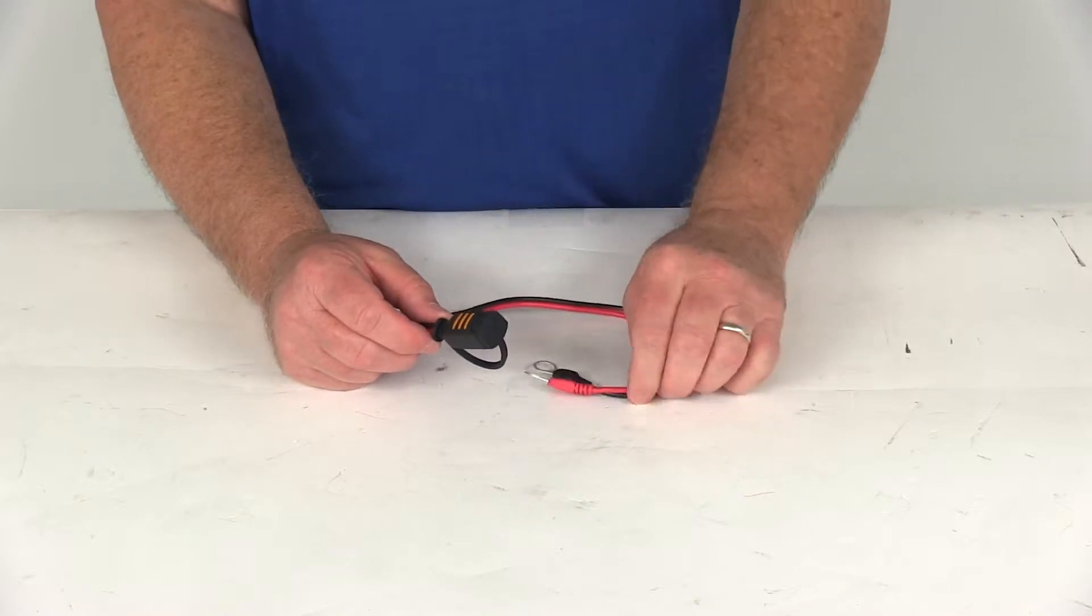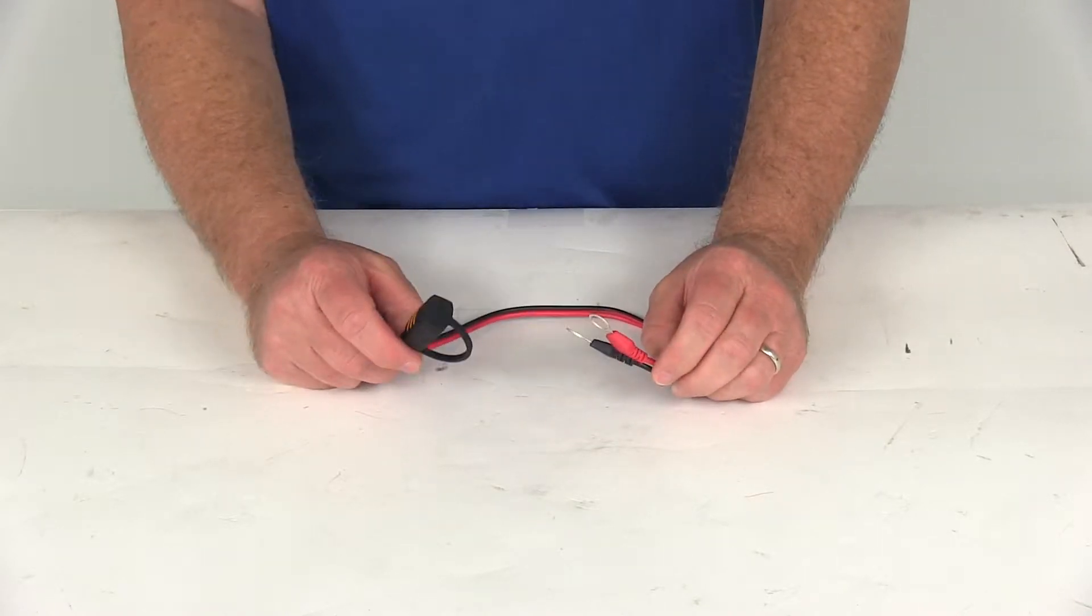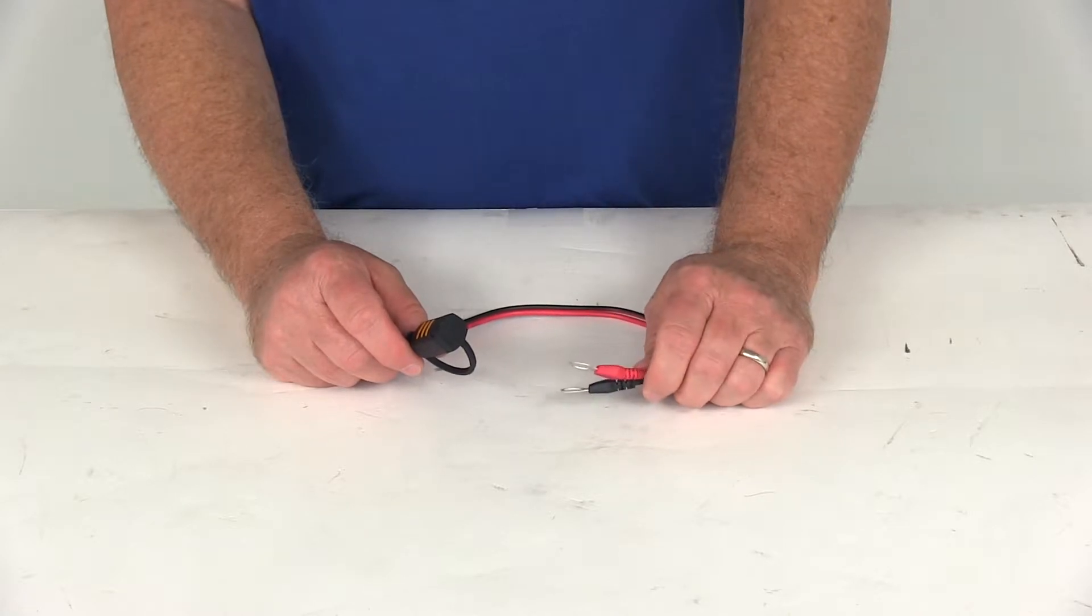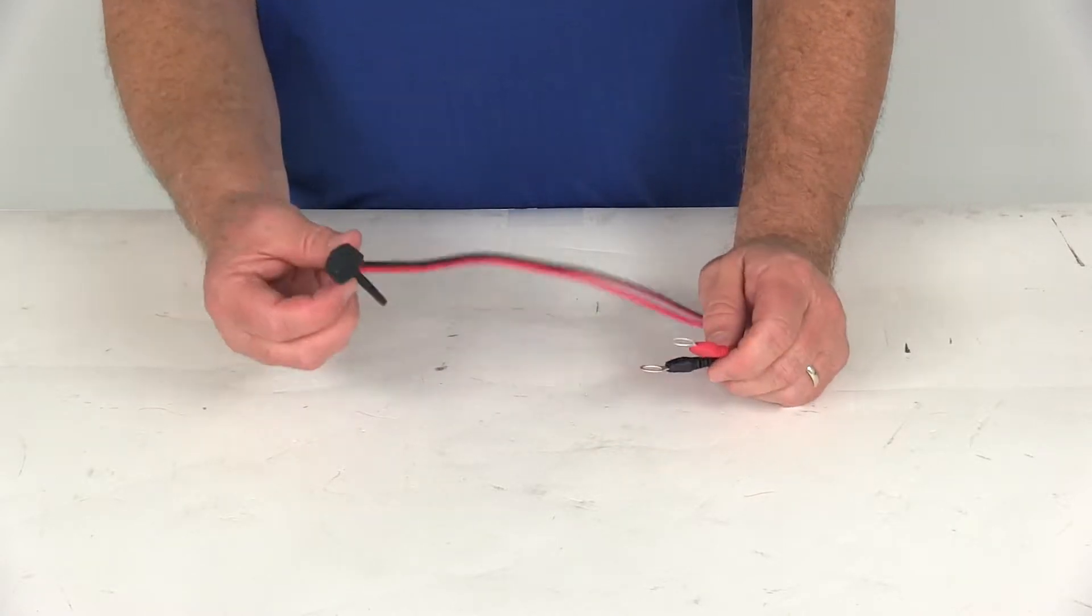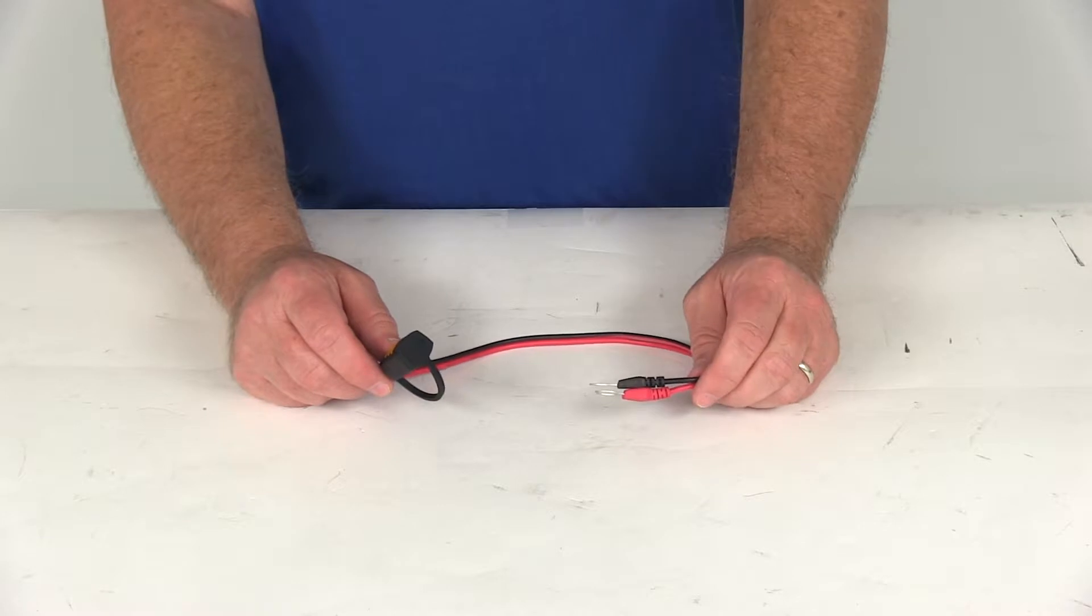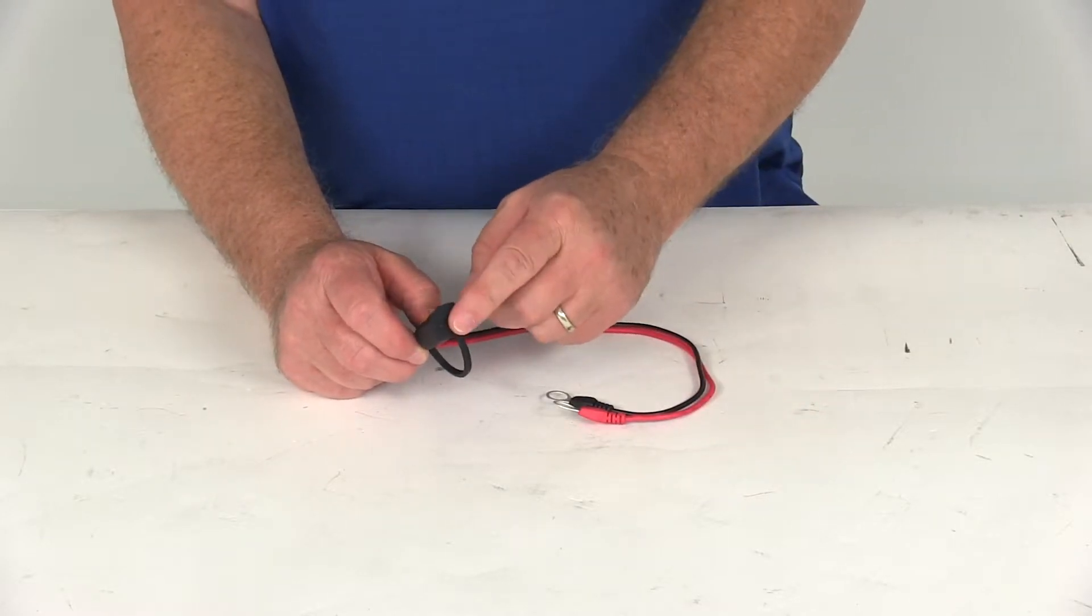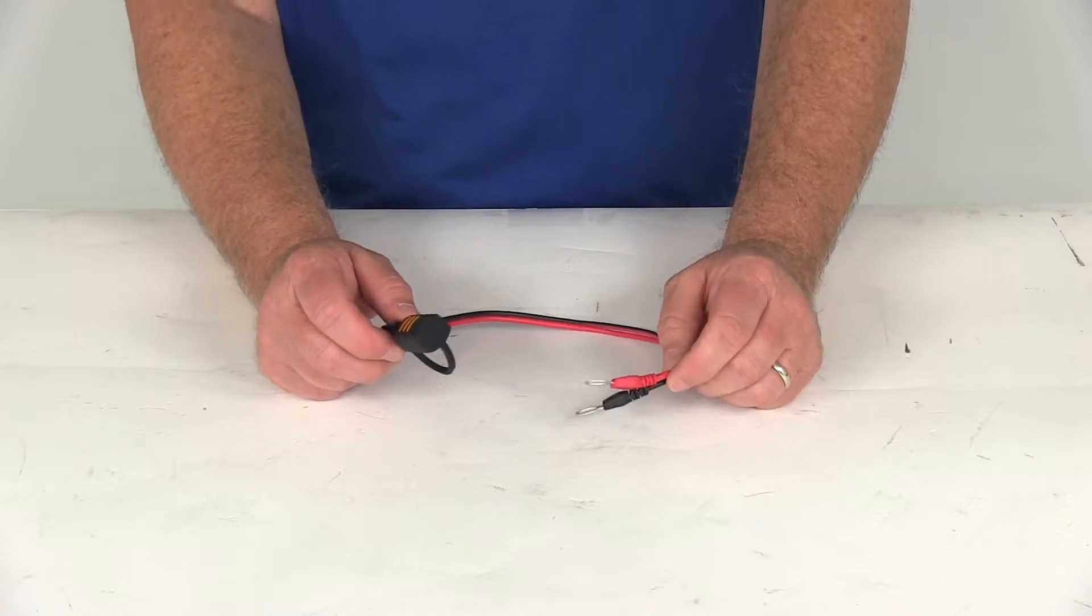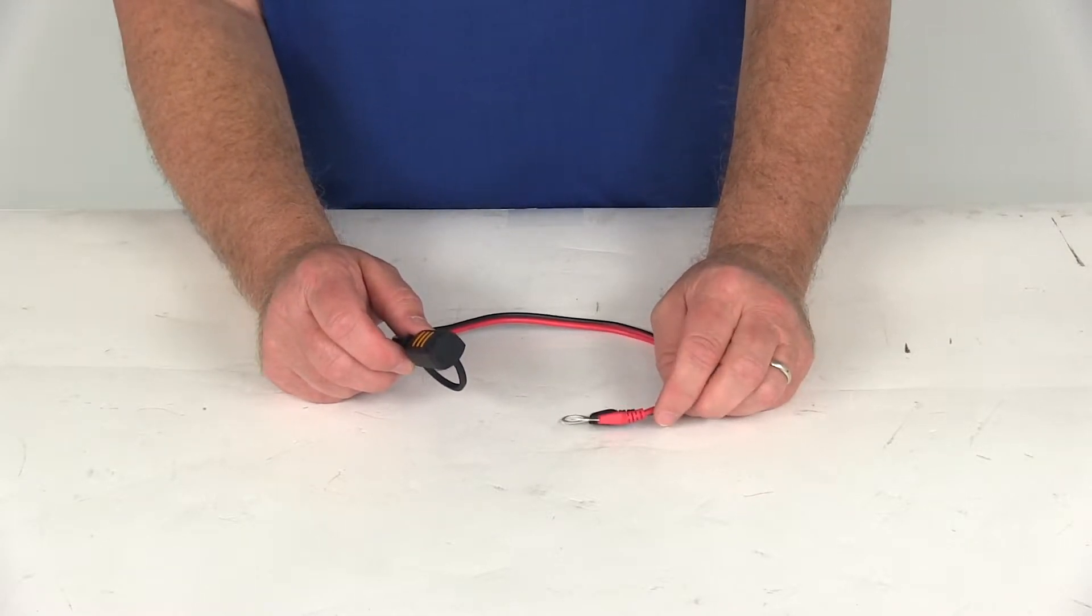Now you can use this cable if your M6 cable, which is the 6.4 millimeter eyelets that usually come with the CTEK chargers are too small. Or you can use this as a spare to simplify your charging needs. This M10 cable is identical to the 10.5 millimeter eyelet cable that's included with the CTEK multi-US 7002 charger.